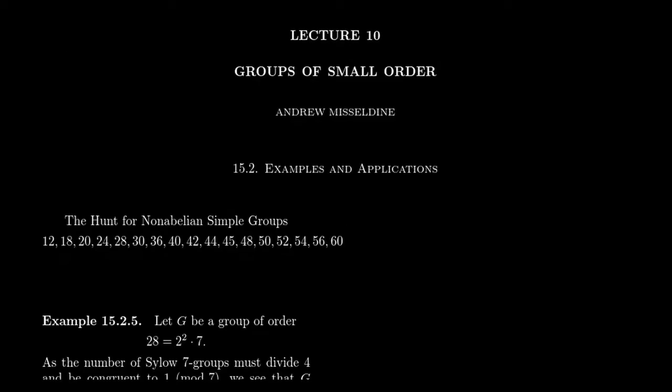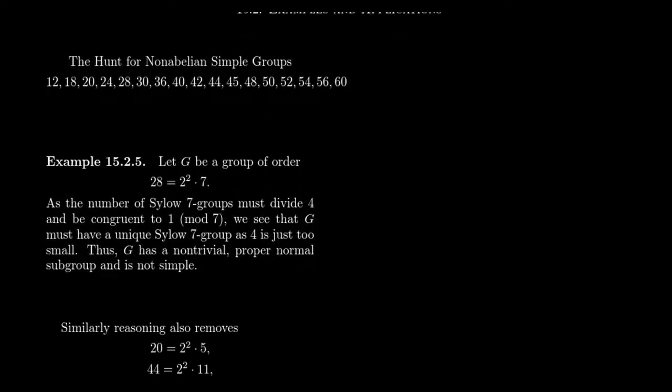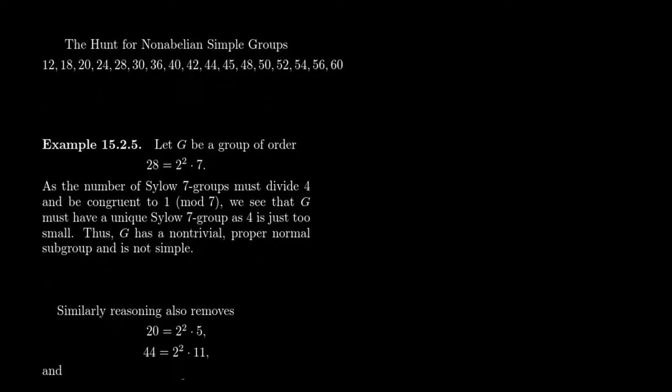And so what we want to do in lecture 10, in multiple videos in lecture 10, is I want to rule out some of these remaining possibilities. So what we're going to do right now is consider the number 28. The factorization of the number plays a critical role here. 28 is 2² times 7, it's 4 times 7.